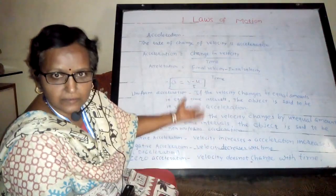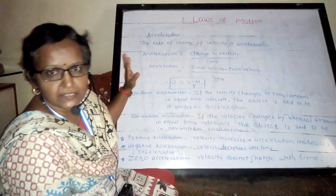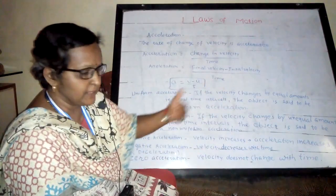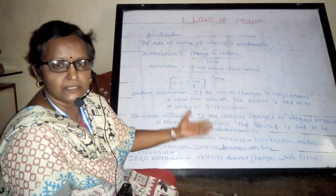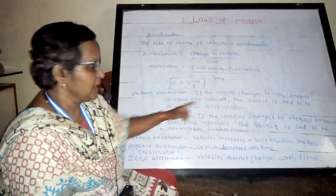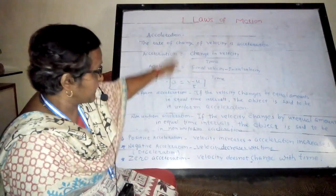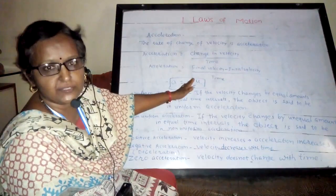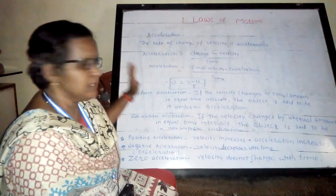Just as we have uniform and non-uniform speed, similarly acceleration is also of two types: uniform and non-uniform. Uniform acceleration: if the velocity changes by equal amounts in equal time intervals, then it is called uniform acceleration. Non-uniform acceleration: if the rate of change of velocity is not the same in equal intervals of time, then it is called non-uniform acceleration. These definitions can also be asked in examinations.